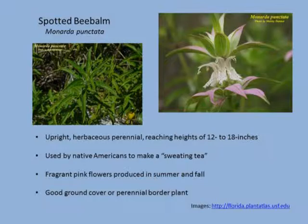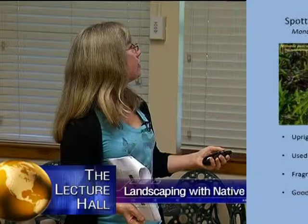Spotted bee balm is another really unique, beautiful plant — an upright herbaceous perennial with very unique flowers. I have some in my yard and can tell you it does spread by seed, which is good, but not in an out-of-control way. It's moderately drought tolerant and was used by Native Americans to make a sweating tea.